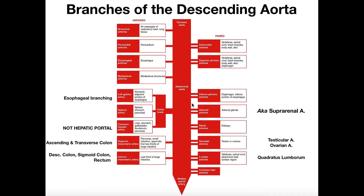In the previous video, we discussed the branches coming off of the thoracic aorta. Here we're going to continue downward through the descending aorta and talk about the branches coming off of the abdominal aorta.